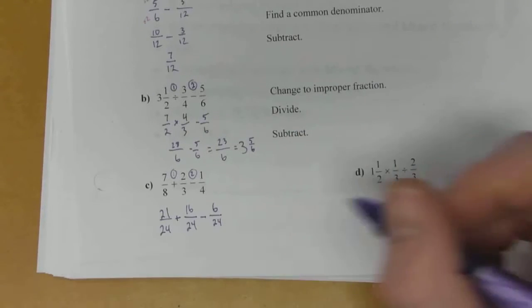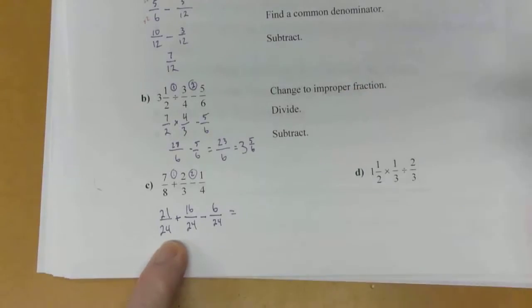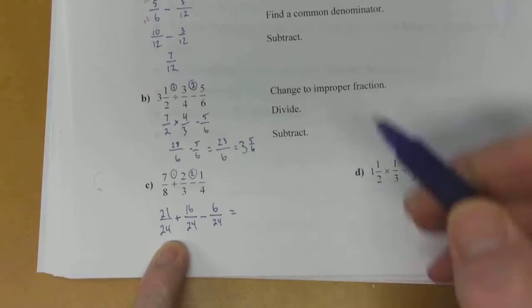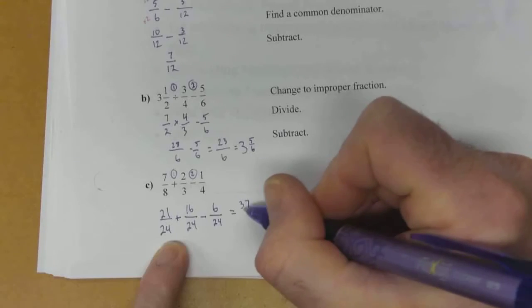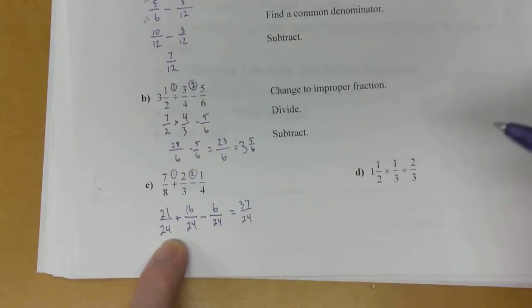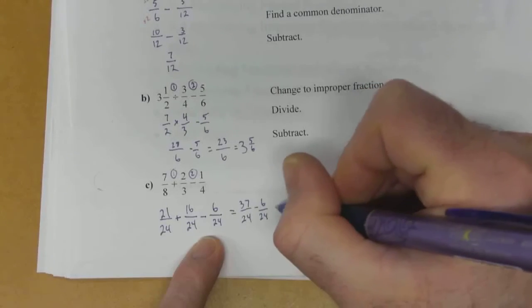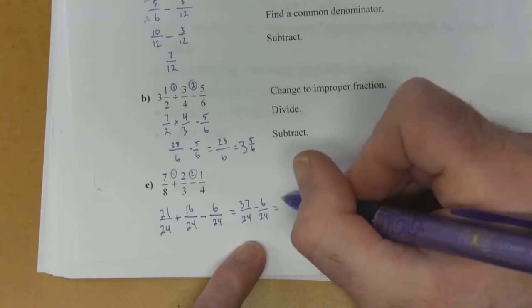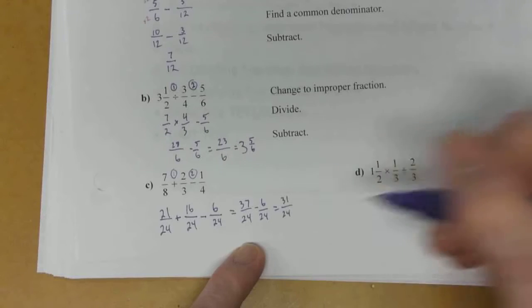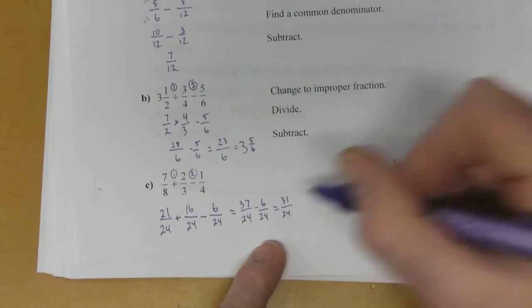So now at this point, we can do our addition first. 21 plus 16 becomes 37. And that's over 24. And then we've got subtract 6 over 24. 37 minus 6 gives you 31. And that's over 24 still. So that's your answer.